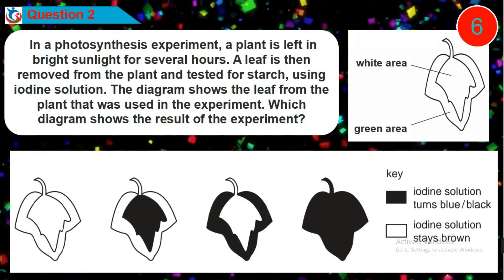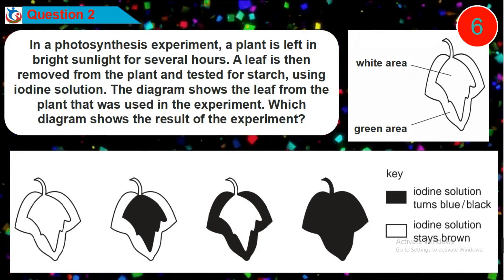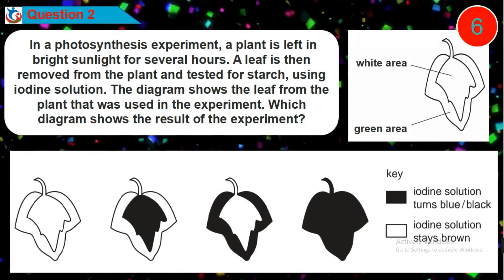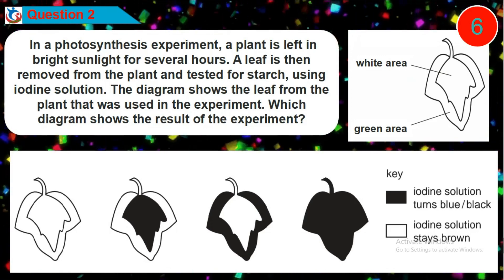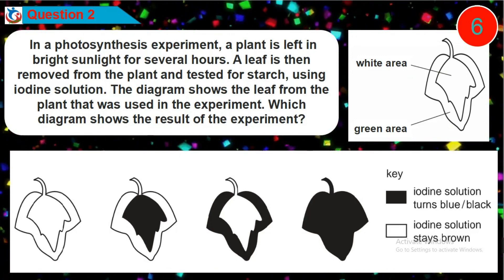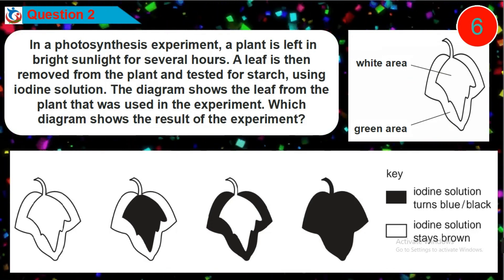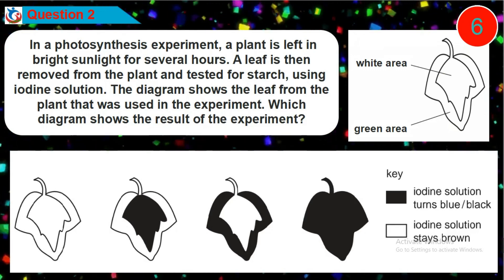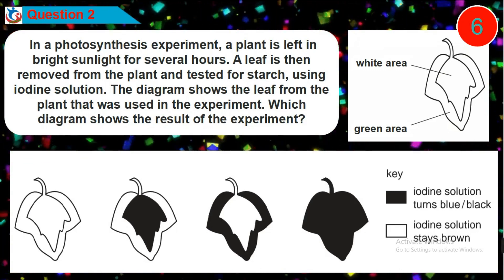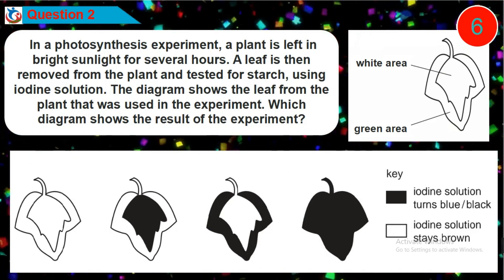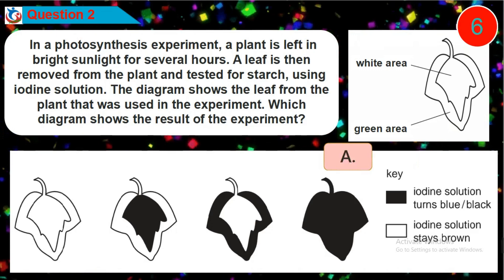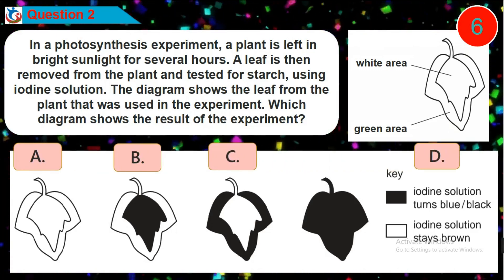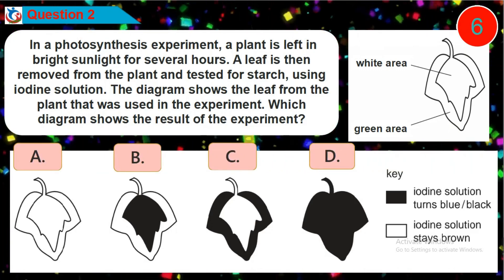A leaf is then removed from the plant and tested for starch using iodine solution. The diagram shows the leaf from the plant used in the experiment. Which diagram shows the result of the experiment? Is it option A, B, C, or D?